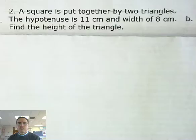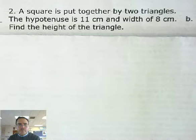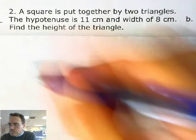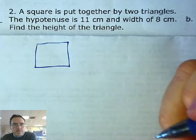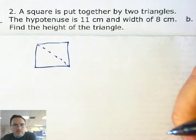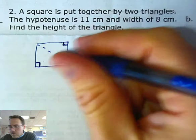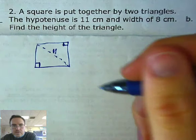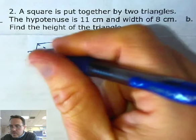A square is put together by two triangles; the hypotenuse is 11 centimeters. The two triangles are like a sandwich cut down the middle. The hypotenuse — our vocab word — is the one across from the right angle, so that's 11 centimeters. The width is 8 centimeters, and we want to know what the height is going to be.